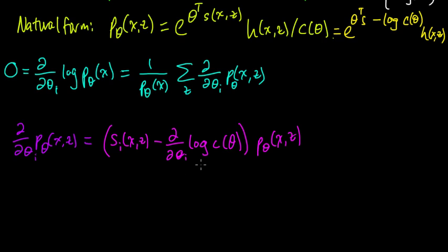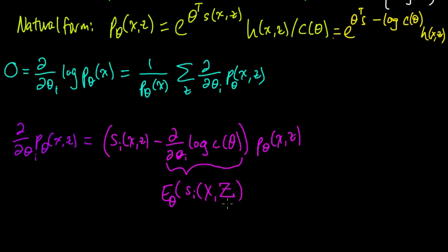Now, one of the beautiful things about exponential families — as covered in earlier videos — is that the derivative of log C of theta with respect to theta_i equals the expected value under parameter theta of the i-th sufficient statistic S_i. So d/d theta_i of log C(theta) equals E_theta[S_i of X and Z], where S_i are the sufficient statistics, each component of the vector-valued function S.